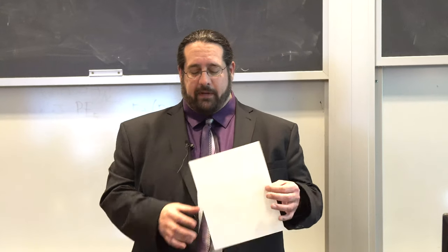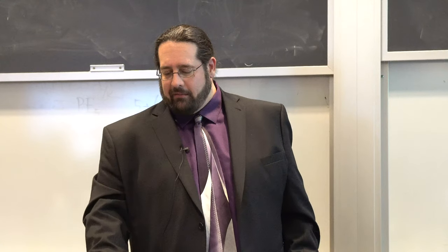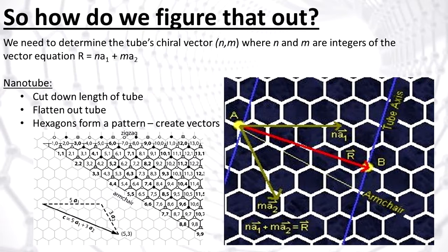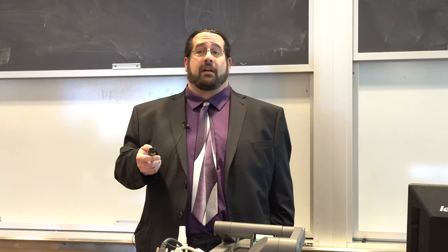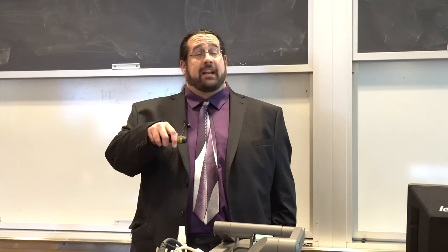To determine the chiral vector: imagine unrolling a carbon nanotube into a flat sheet. Somewhere along one axis, a carbon atom intersects — label that point A. Across the width we draw a line cutting the hexagons exactly in half, called the armchair line. Above the armchair line, somewhere along the opposite axis, we find another carbon atom, labeled point B. The chiral vector is the vector from A to B. If the angle between the armchair line and the chiral vector is zero, it's an armchair nanotube; if 30 degrees, it's zigzag; anything in between is chiral.